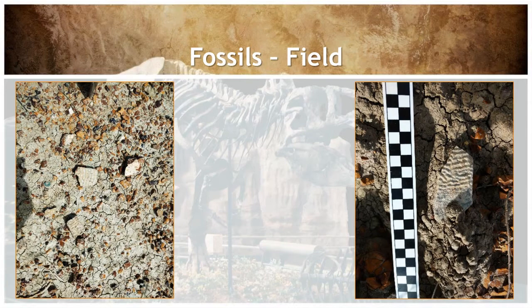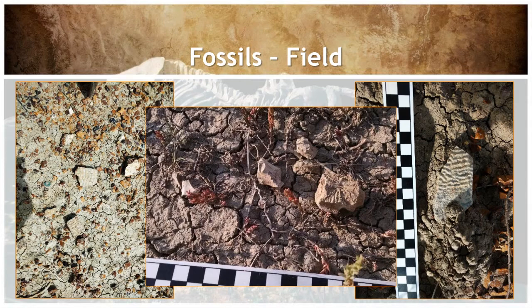Usually while surveying for paleontological resources, the fossils found will look like broken or scattered surface material. These fossils are turtle shell fragments with pieces of a crocodile vertebra in the photo in the middle, and they illustrate how fossils can vary and can be broken up and laying on the surface.